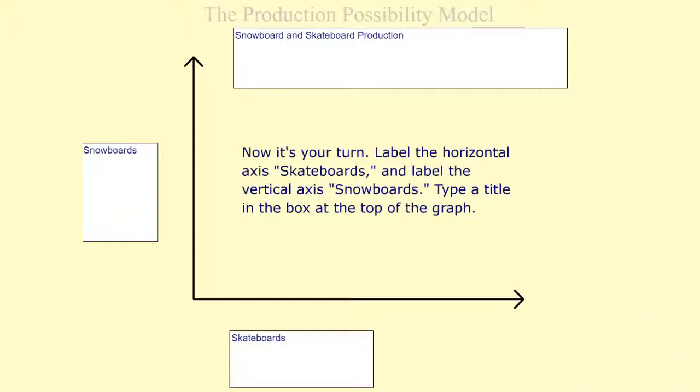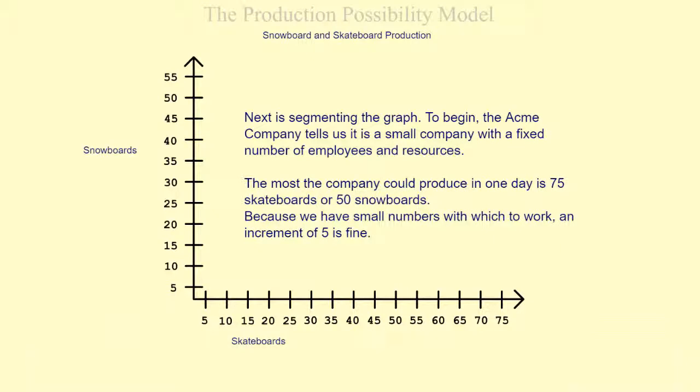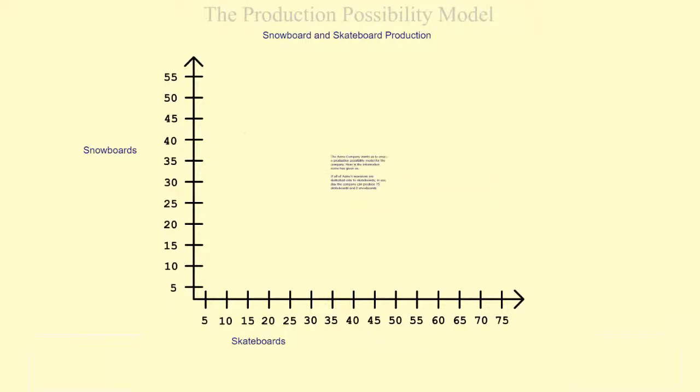Next is segmenting the graph. To begin, the Acme Company tells us it is a small company with a fixed number of employees and resources. The most the company could produce in one day is 75 skateboards or 50 snowboards. Because we have small numbers with which to work, an increment of 5 is fine.